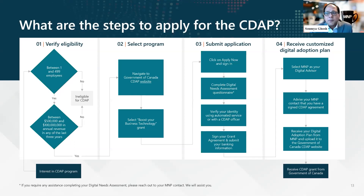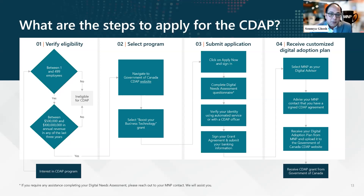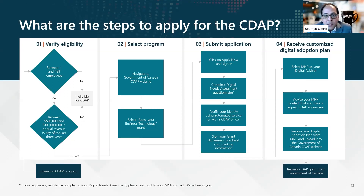Once you go to the website, select 'Boost Your Business Technology Grant,' click 'Apply Now,' and sign in. You'll see the signing option using GC Key combined with your Canada Business Account. There is another option called the Partner Bank Login Key — using your corporate banking information to log into the same website. There are two options; whichever works for you, feel free to move forward. If you're stuck or have any questions, feel free to reach out to us.